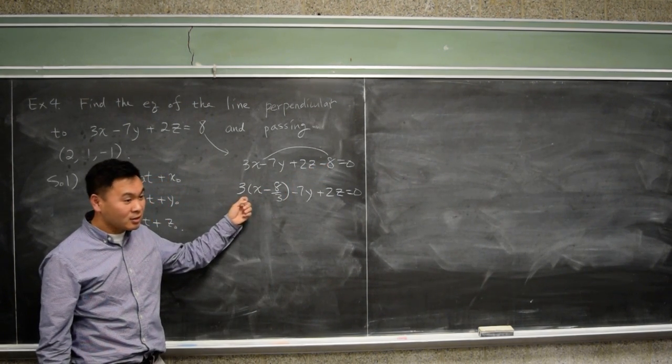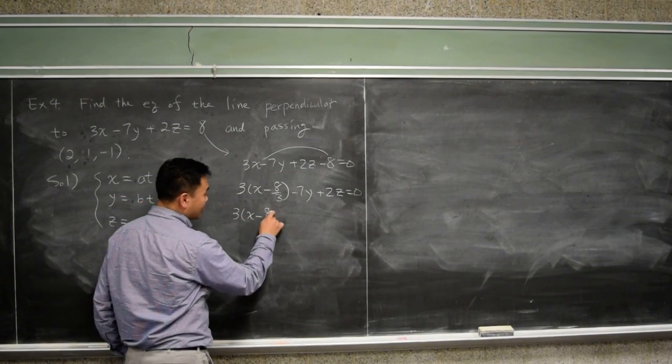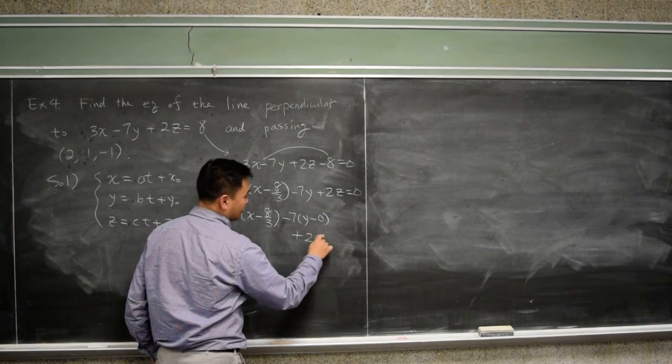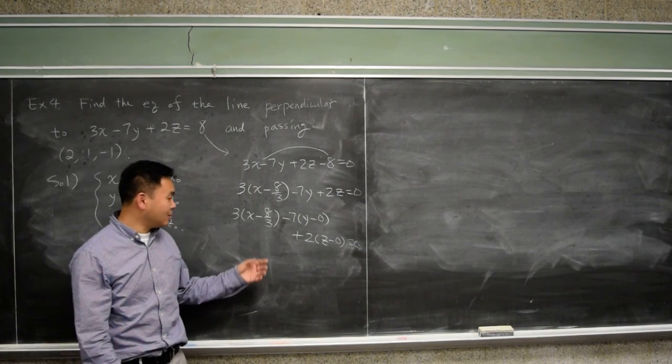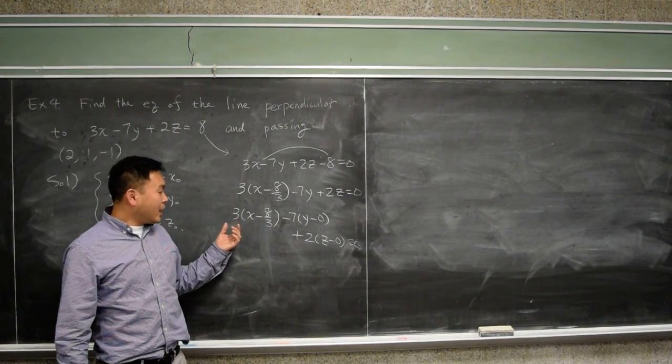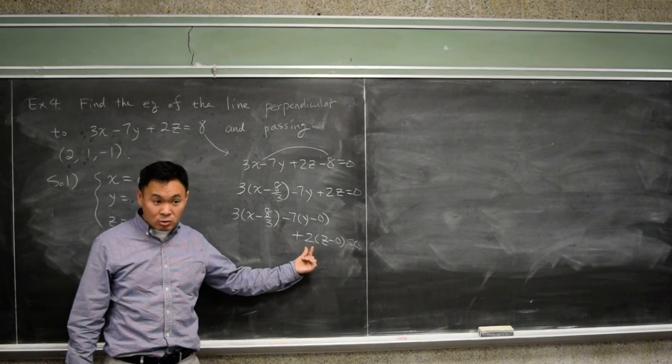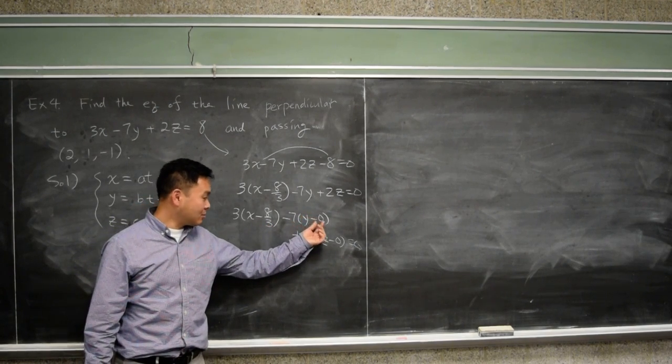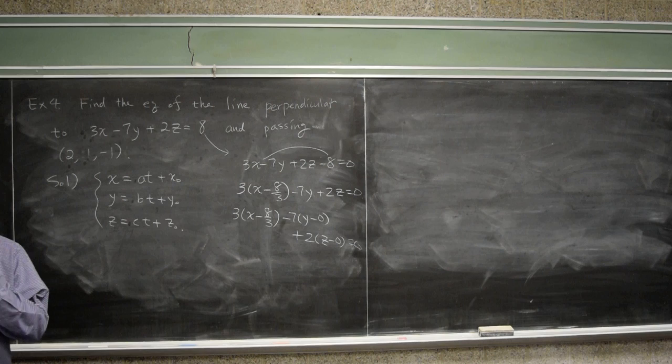Now, viewing it this way, this tells us the following. It means that what we have in front of us is a plane that's perpendicular to the vector 3, negative 7, 2. And it passes through the point negative 8 over 3, comma 0, comma 0. That's what it means. Does that make sense?